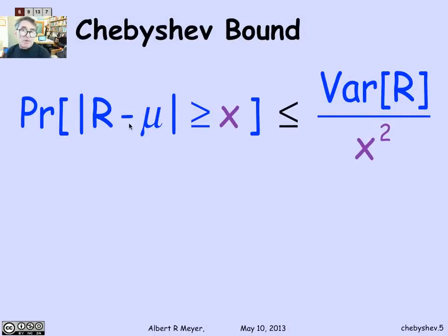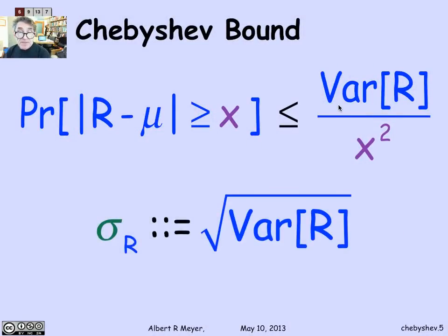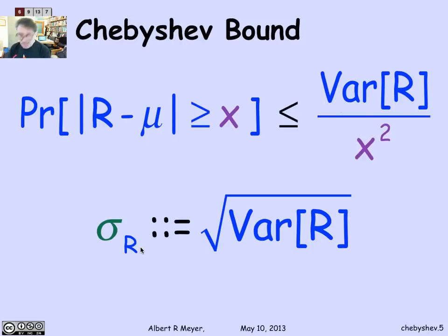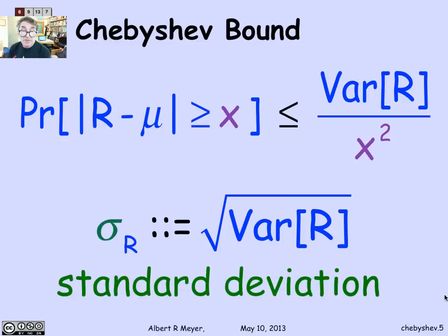And here we're back to restating the Markov bound in terms of the variance. The variance has one difficulty with it, and that leads us to want to look at another object, which is just the square root of the variance, called the standard deviation.